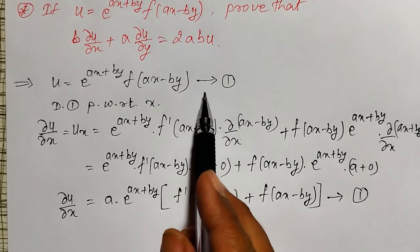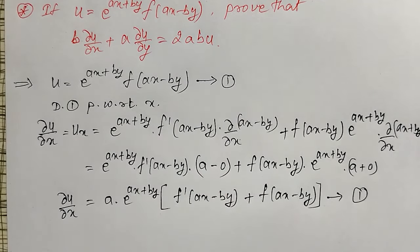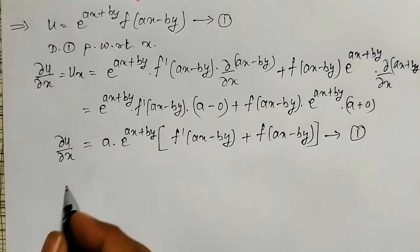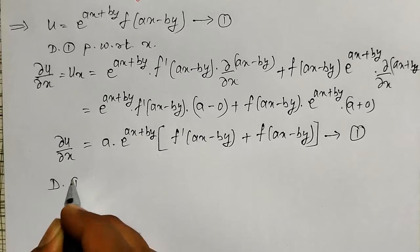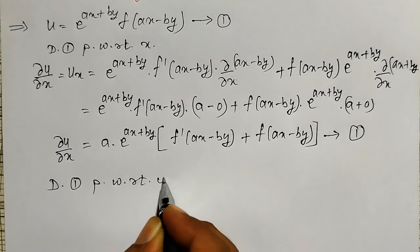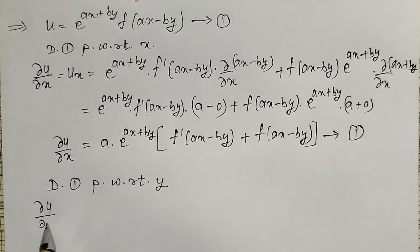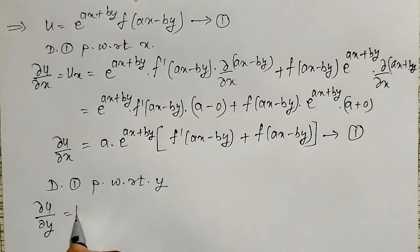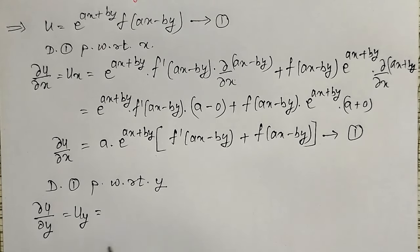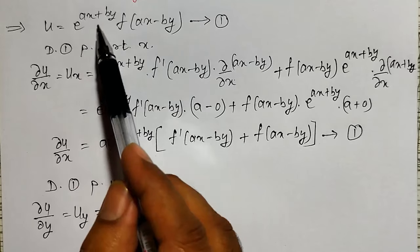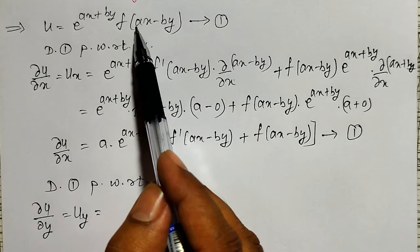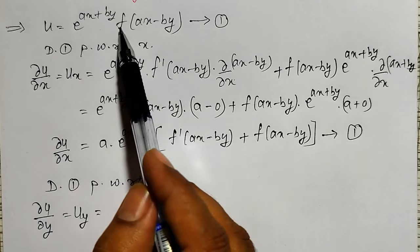Like that, let me differentiate equation one partially with respect to y now to get ∂u/∂y. The notation is ∂u/∂y, equal to u_y. Now, while differentiating partially with respect to y, again what you can observe: e raised to ax plus by and f of ax minus by — both are containing the terms of y. Therefore, again product rule I have to use.